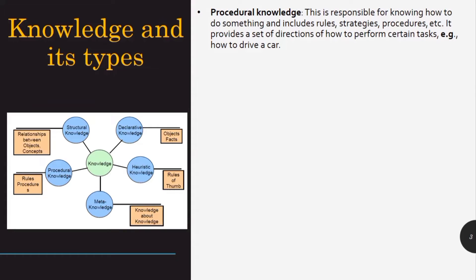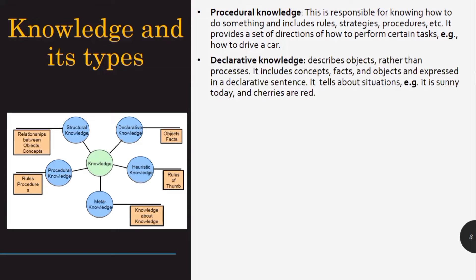The other one is declarative knowledge. This knowledge describes objects rather than processes. In procedural knowledge it defines the processes or rules, but in declarative knowledge it defines or describes the objects. It includes concepts, facts and objects, and is expressed in a declarative sentence. It tells about situations. For example, it is sunny today or it's cloudy today, and cherries are red.